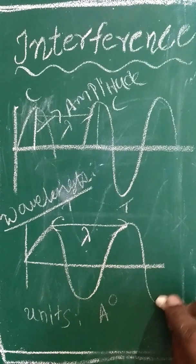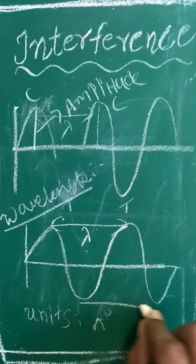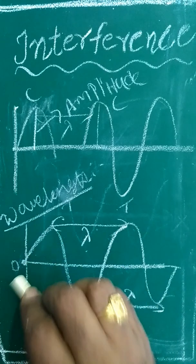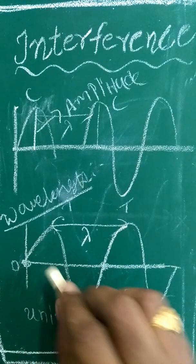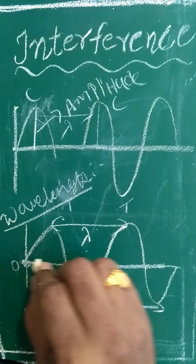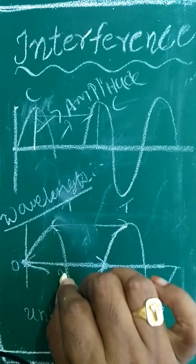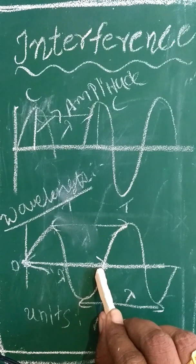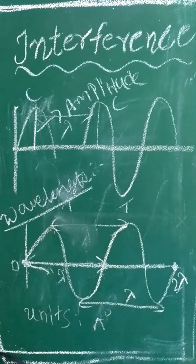Wavelength can be taken as the distance between two successive crests or the distance between two successive troughs. It can also be taken as the length of one complete cycle. These zero-displacement points are called nodes and the peak points are called antinodes. From here to here is lambda, and the next complete cycle is also lambda, so this position equals two lambda.